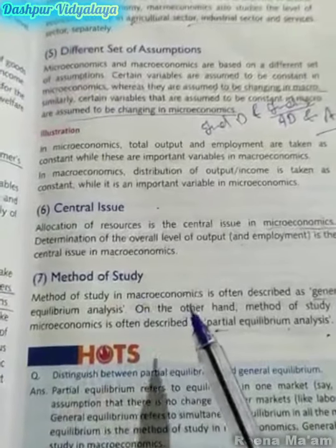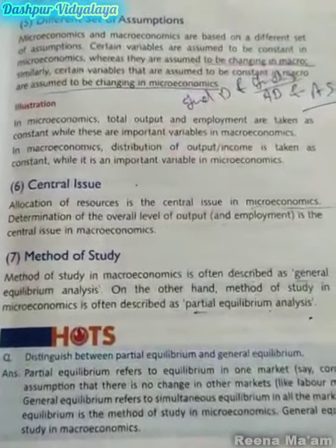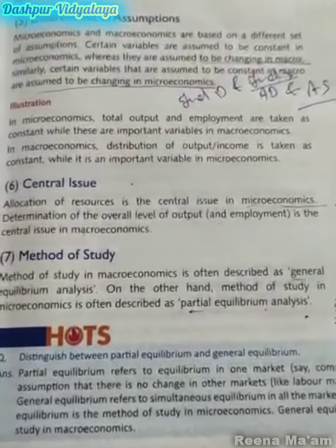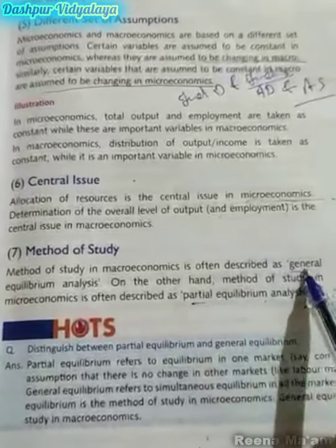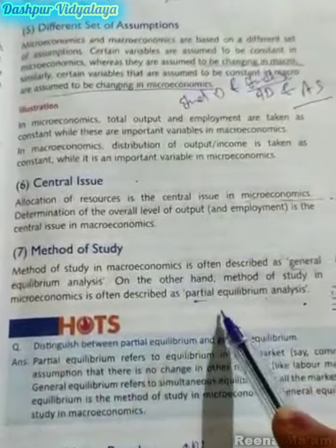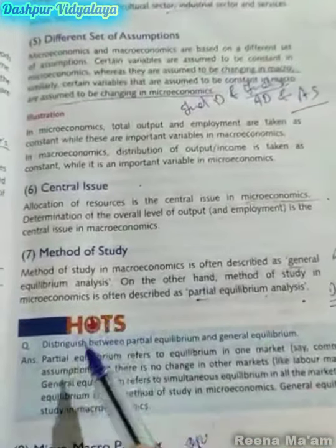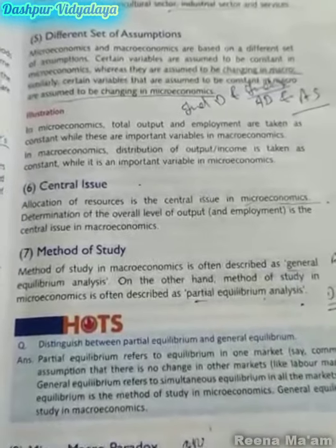The seventh point is method of study. Under this we study general equilibrium and partial equilibrium. General equilibrium is a matter of macroeconomics while partial equilibrium is a matter of microeconomics. You can see the distinction between partial equilibrium and general equilibrium in the HOTS section. Partial equilibrium generally refers to demand and supply in a small town or small area.